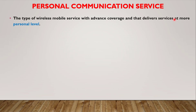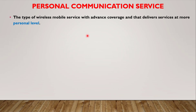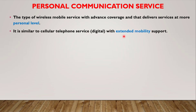Personal communication service is a type of wireless mobile service with advanced coverage that delivers services at a more personal level. That means you need to install more number of antennas to blanket a particular geographic area. For example, in first generation we used to use a bigger base station which was used to cover an area of about 50 miles or more. But in second generation and onward, in personal communication systems, we have to deploy more number of smaller antennas in order to cover the same geographic area so that services can be delivered at a more personal level. These antennas also help in extending the mobility support to the system.